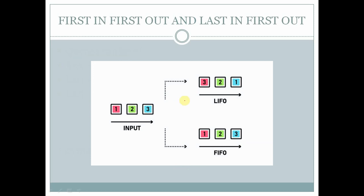This is a pictorial representation of first in first out and last in first out. If we are inserting the first element first, the second element after that, and the third element after that — in the case of first in first out, the first element will exit first from the queue, followed by the second element, and then the third element.